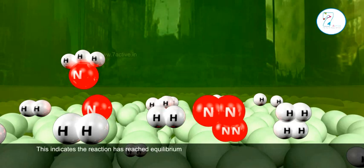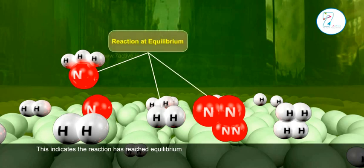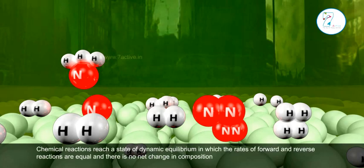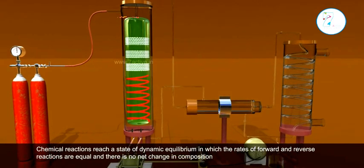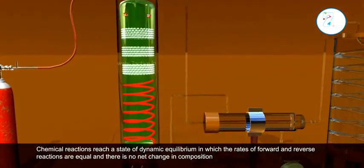This indicates the reaction has reached equilibrium. Chemical reactions reach a state of dynamic equilibrium in which the rates of forward and reverse reactions are equal and there is no net change in composition.